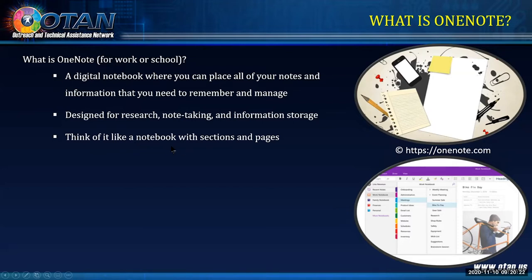Think of it like a notebook. Imagine you have a blue binder with sections — that's your notebook. In each section you have pages. Just remember the word notebook: a notebook with three or five sections, each with a color. That's your section, and in each section you have pages. That is the concept to remember when someone asks what OneNote is.